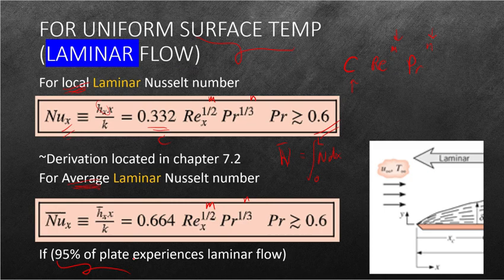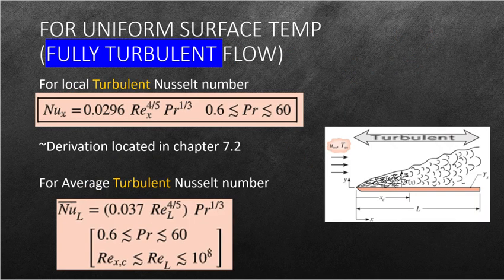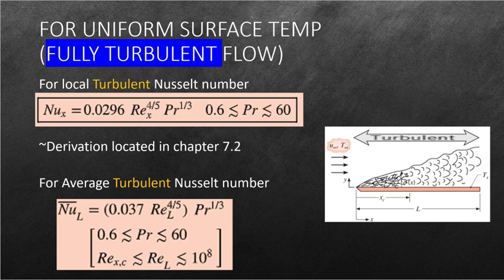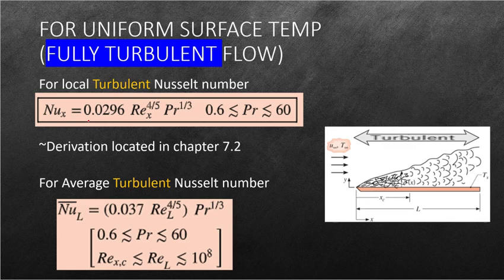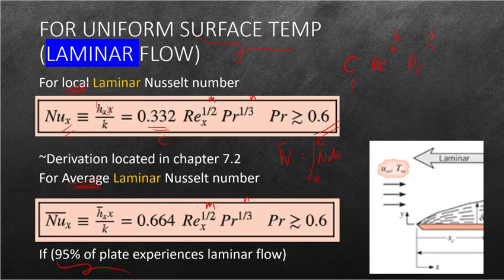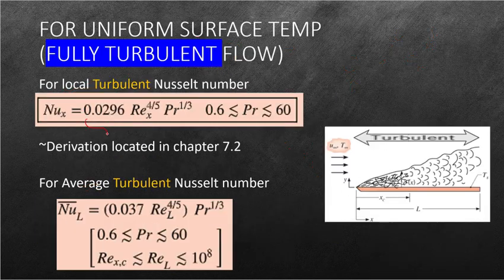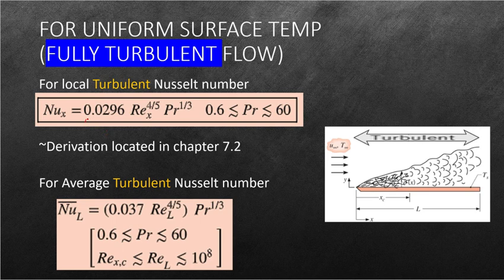So speaking of turbulent Nusselt numbers, if our flow is categorized to be fully turbulent, meaning to say from the start to finish the flow is turbulent as we can see here in the diagram, our formula changes. So instead of your 0.332 as seen here, it will now be 0.0296, and instead of 1 half, our exponent will be 4 fifths.